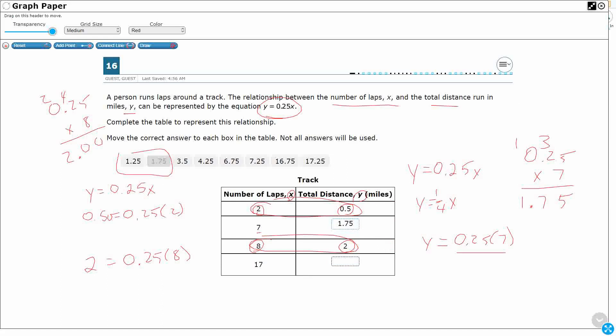Now, we could also use reasoning here. Look, if 8 equals 2, 17 is a little bit more than doubling it. So doubling 2 would give me 4. I'm needing a little bit more than 4. So I'm looking at that one right there. But let's just see. Y equals 0.25 times 17.